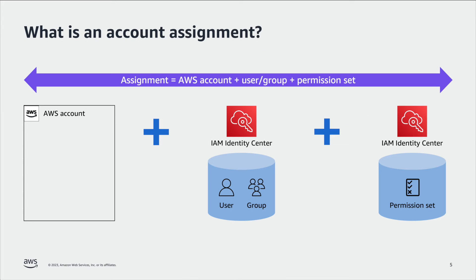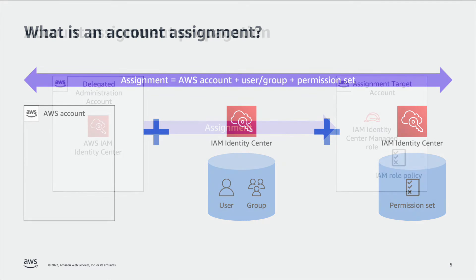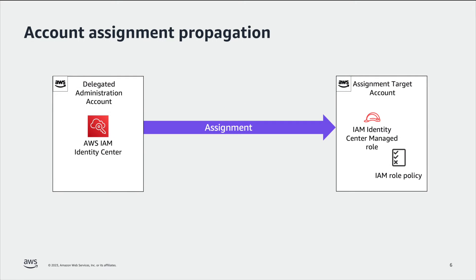Within IAM Identity Center, a permission set is a template that contains one or more IAM policies that can be applied to a user or group in one or more AWS accounts. The entitlement of a user or group to a permission set in an AWS account is called an assignment. When you create an assignment, IAM Identity Center creates a corresponding IAM role managed by IAM Identity Center in the target AWS account, and the policies specified in the permission set are attached to that role.